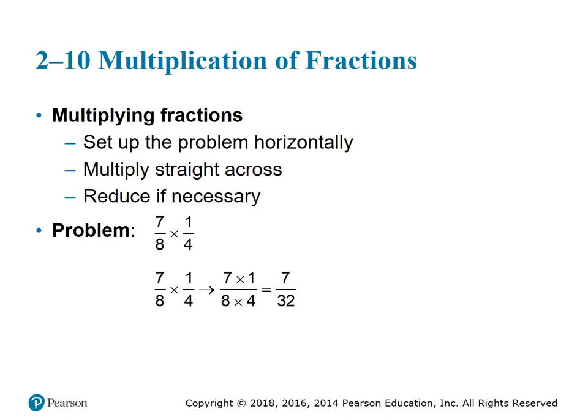To facilitate multiplication of fractions, set up the problem horizontally. One of the simplest computations is multiplying a common fraction — all you have to do is multiply straight across, with no common denominator needed. Then reduce if necessary. For 7/8 times 1/4: multiply numerators (7 times 1 equals 7) and denominators (8 times 4 equals 32), giving 7/32. That's already in lowest form.